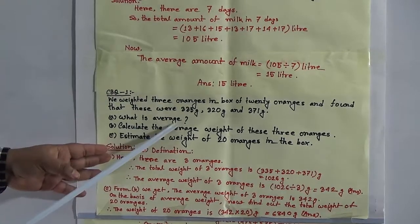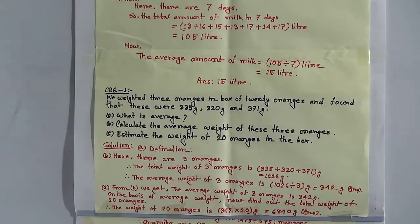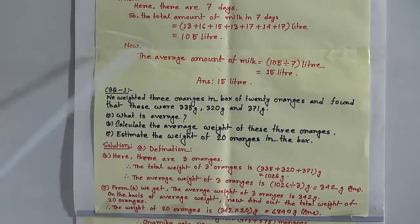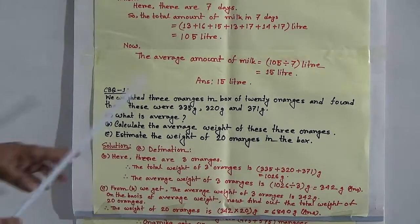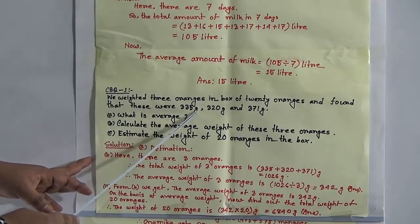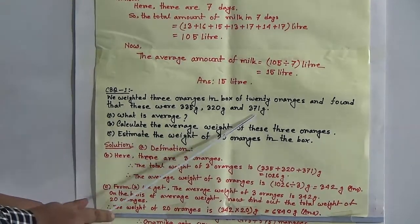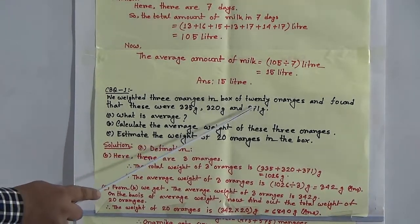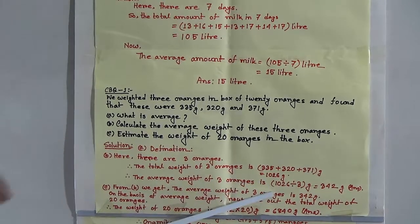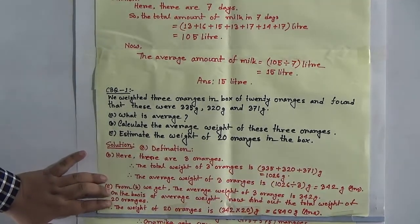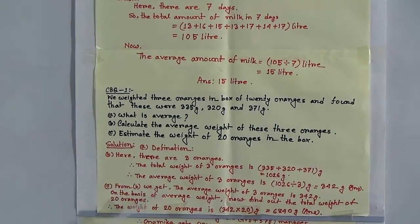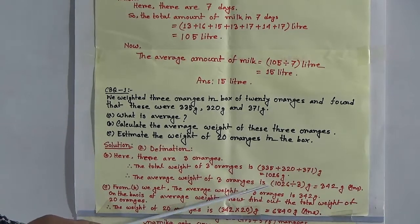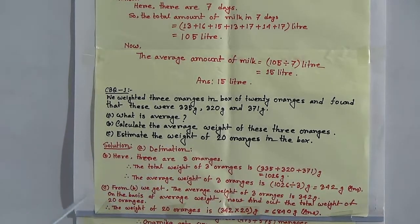Question B: calculate the average weight of these three oranges. The number of quantities is 3. The weights are 335 grams, 320 grams, and 371 grams. We add these three weights: 335 + 320 + 371, and we get 1026 grams. To find the average weight, we divide 1026 by 3 and we get 342 grams, which is the answer.